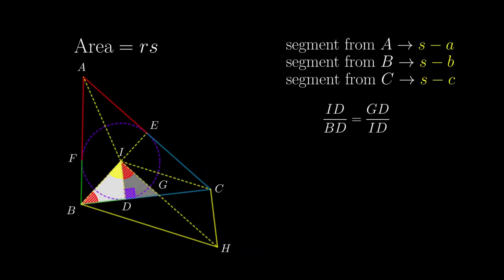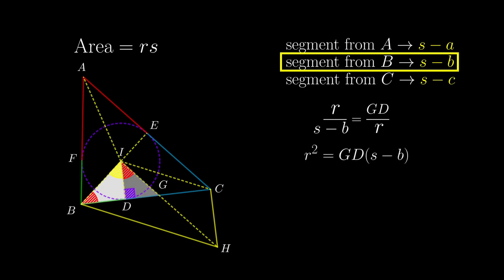From this pair of similar triangles, we have this proportion of sides. Since ID is the inradius, we replace ID by r, and from the previous results, we have BD to be s-b. Rearranging, we get this formula.